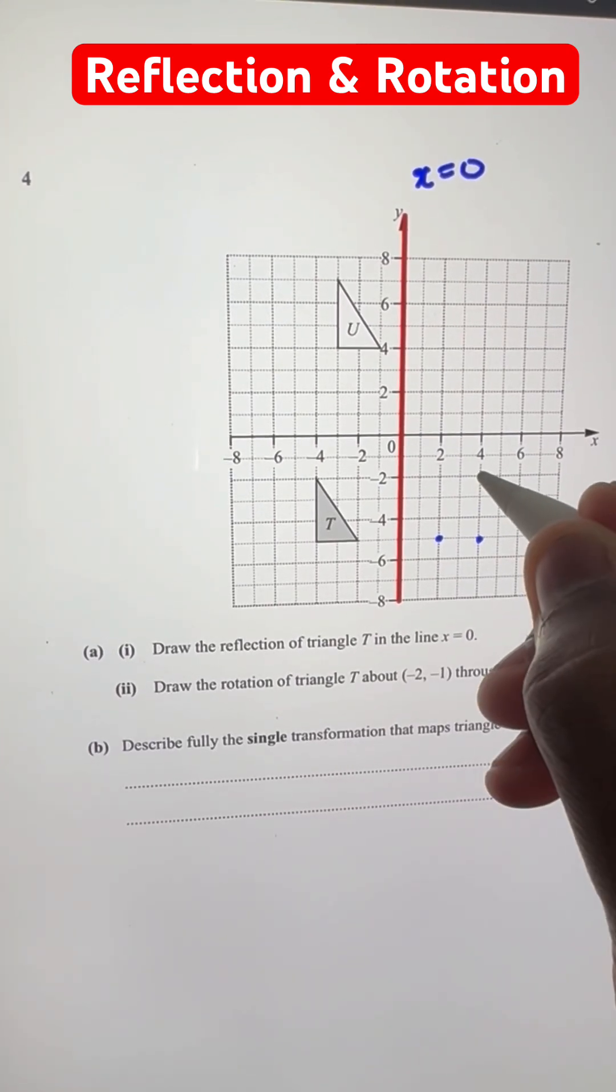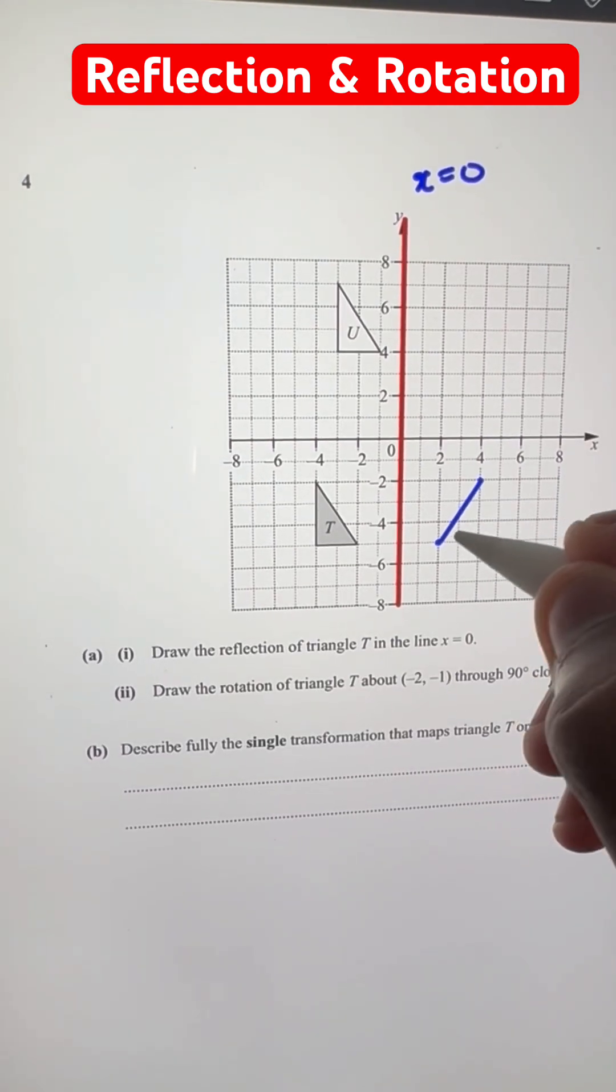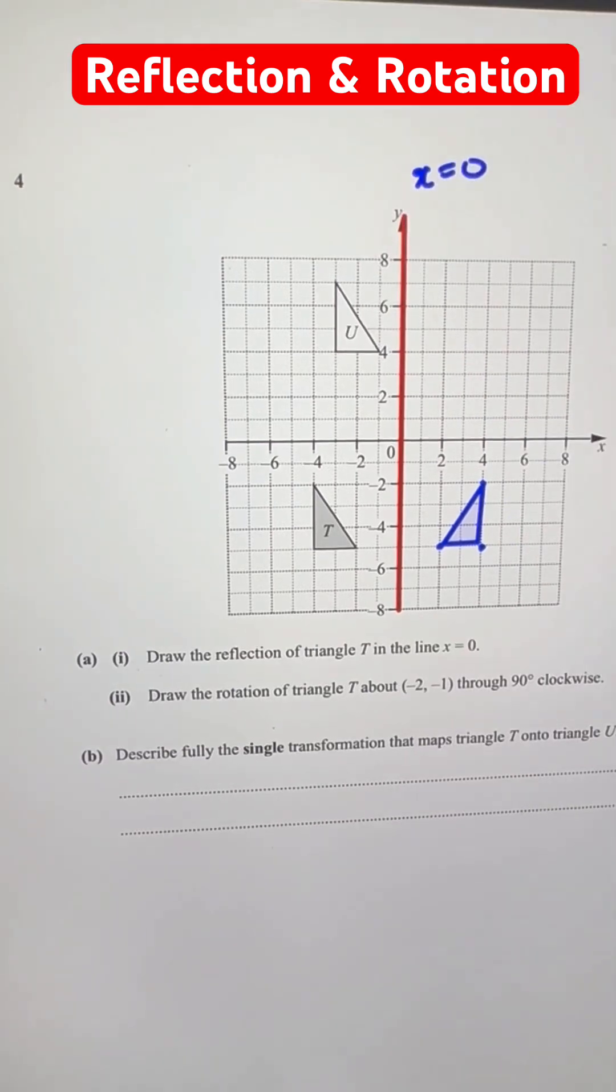And doing that for the other two points, you'll get these two as well. And now you can just join the dots to get the answer for part 1 over here.